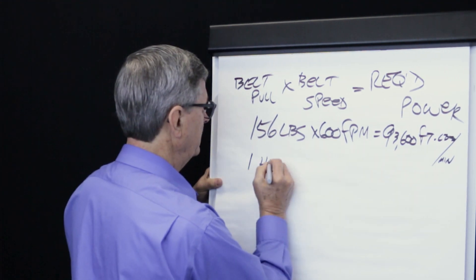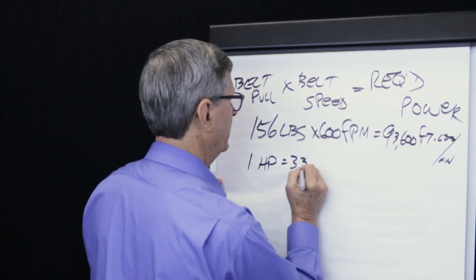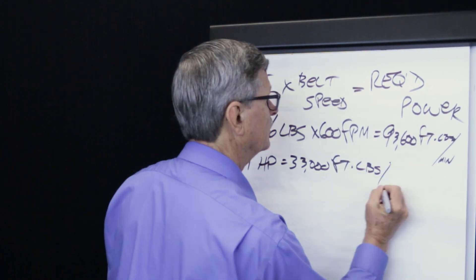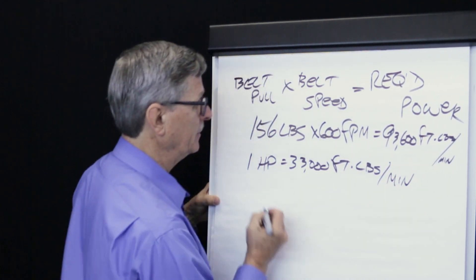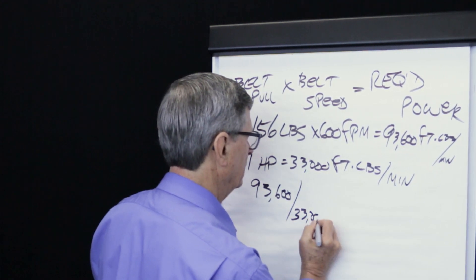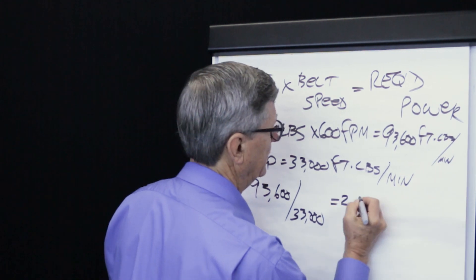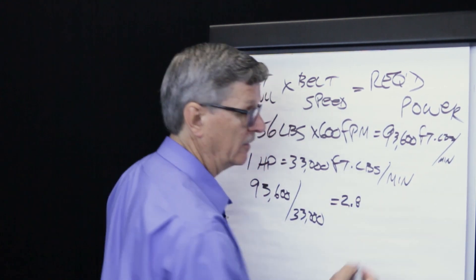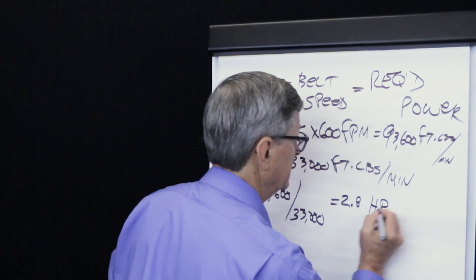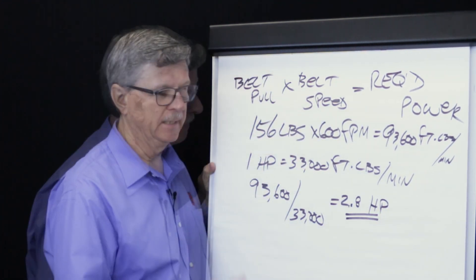Now how do we convert that to a useful unit of measure? Well, we know that one horsepower equals 33,000 foot-pounds per minute. So, simply dividing 93,600 by 33,000, we determine that the power required to overcome the skirt board system drag is 2.8 horsepower.